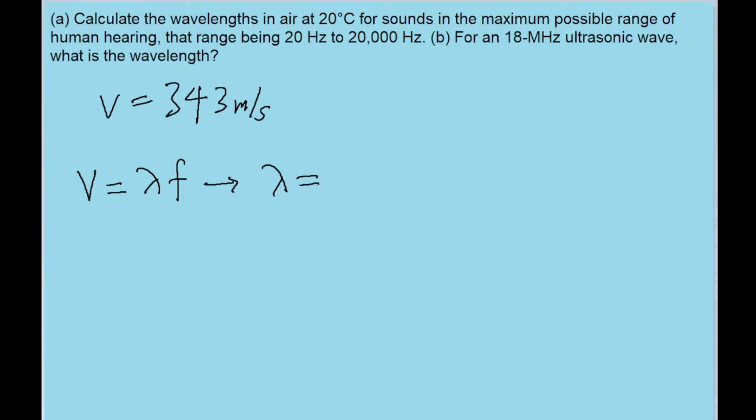What we have to do is algebraically solve for the wavelength by dividing both sides of this equation by the frequency so that they cancel out on this side and we're left with a wavelength equation telling us that the wavelength is equal to the wave speed divided by the wave's frequency.